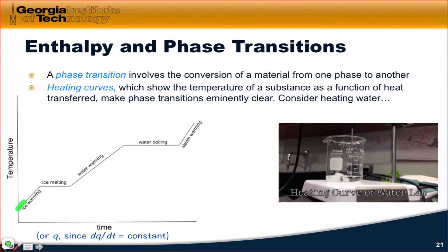As we warm it, the temperature increases linearly with the heat applied, since we're assuming the rate of change of heat with time is equal to a constant. And so as ice warms and heat is applied, its temperature increases.